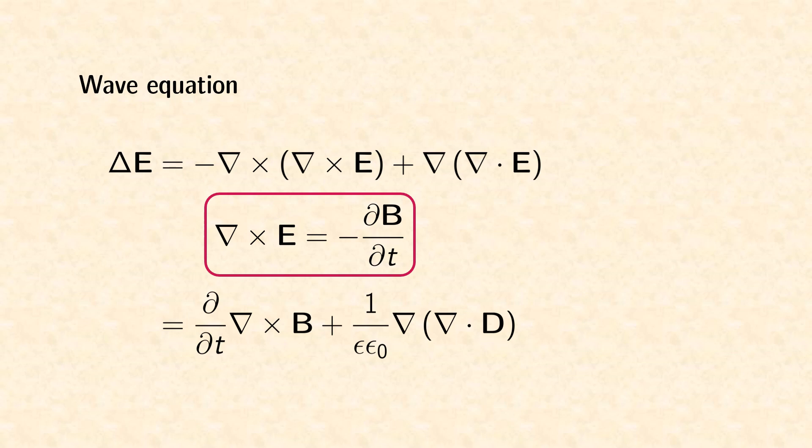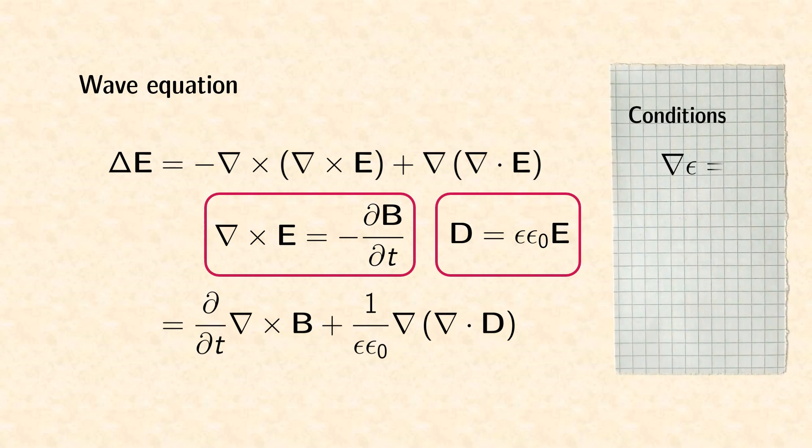In the second term, we replace the electric field by the displacement field. We assume that the gradient of the permittivity is zero or at least sufficiently small.